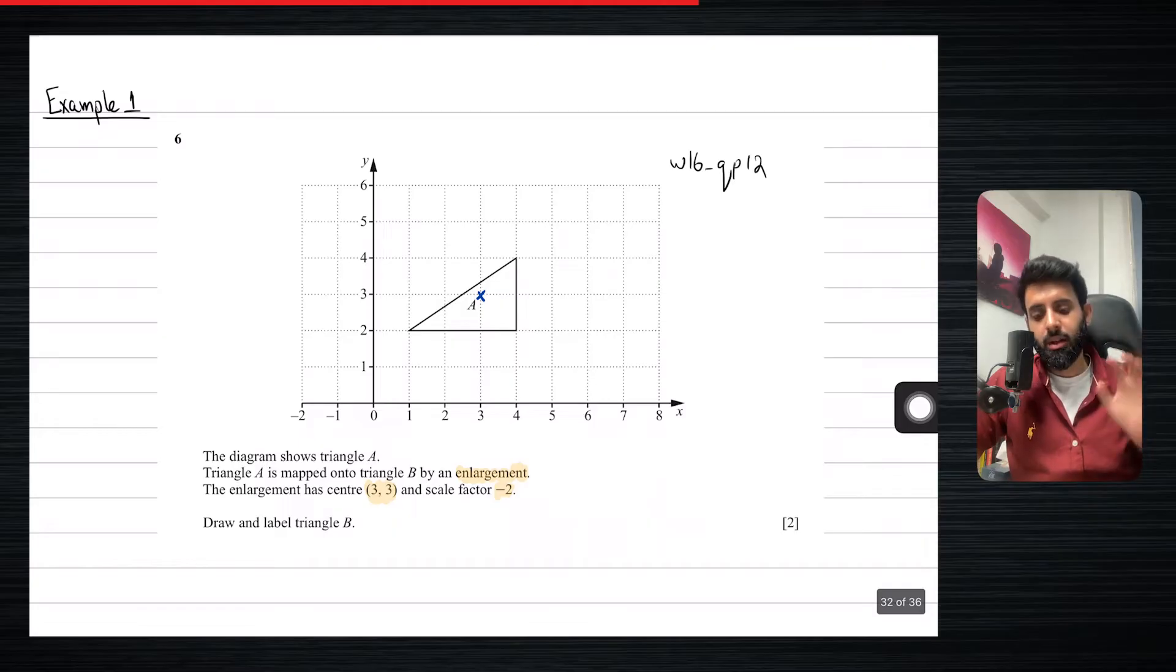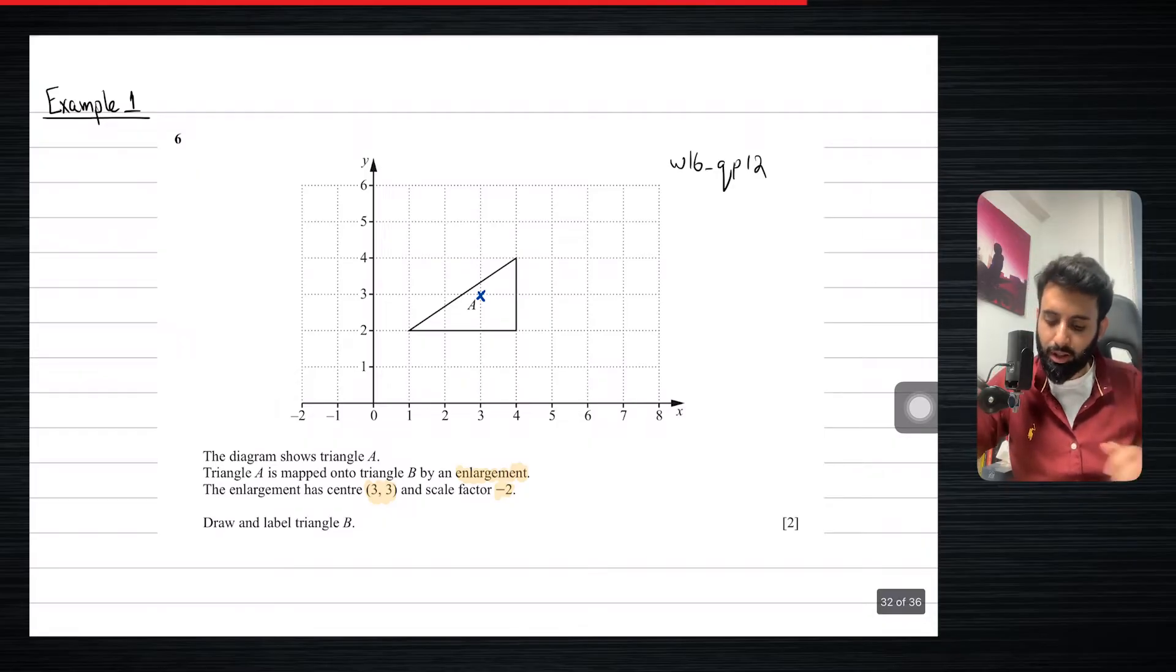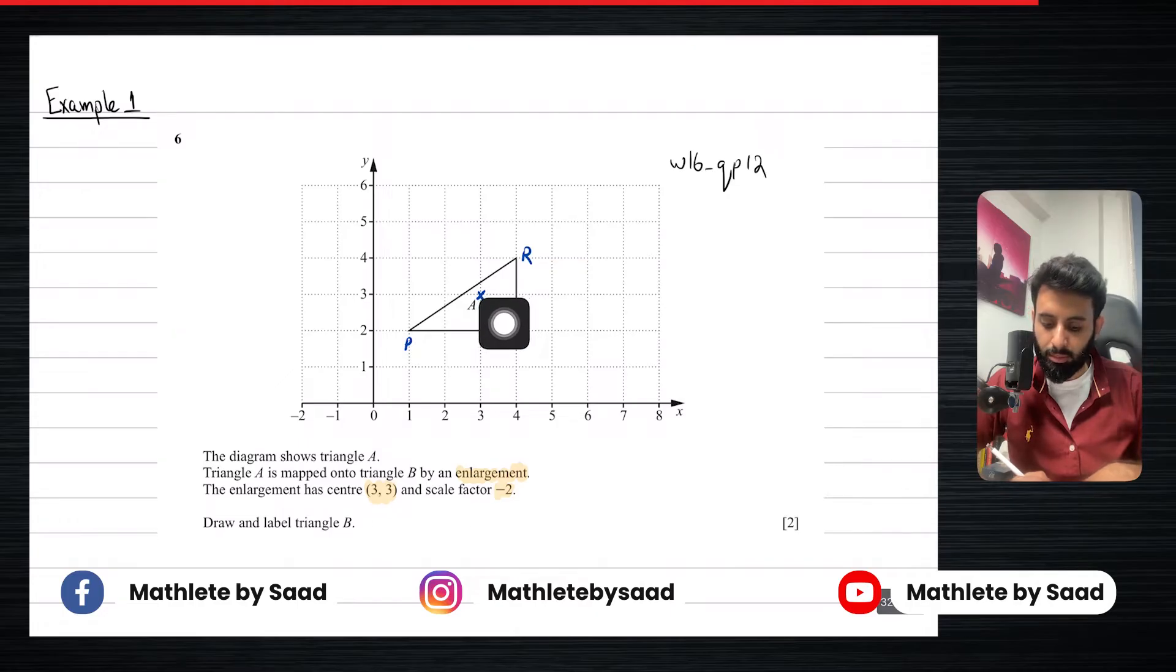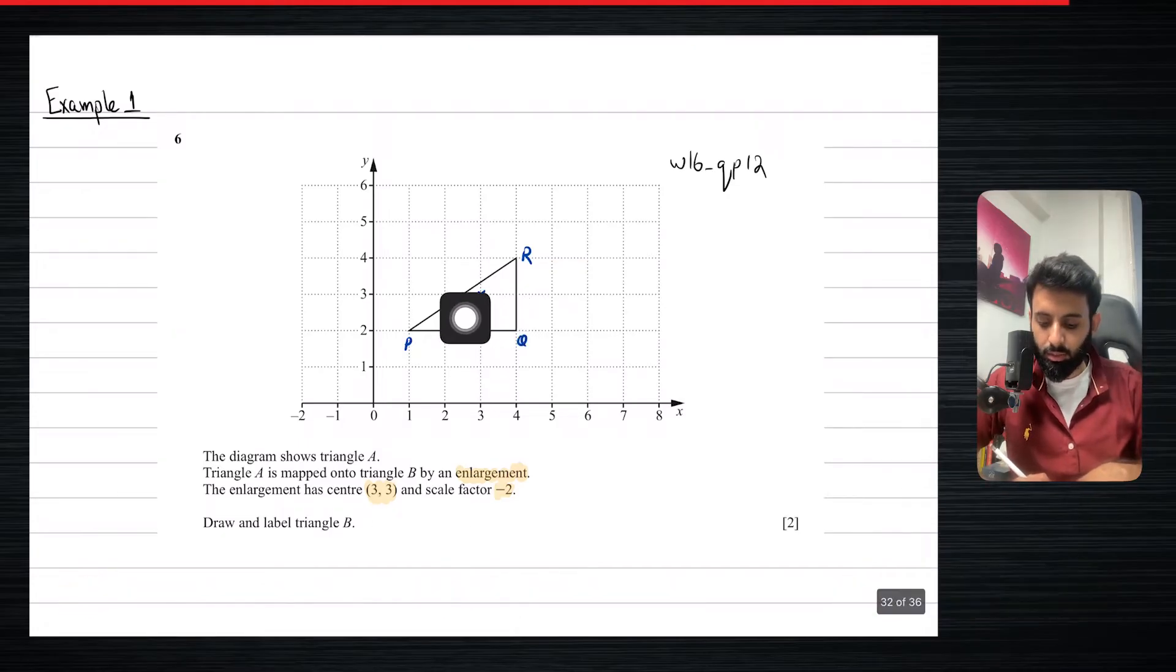So remember that once you're done rotating it, scale factor minus 2 means that the image is going to be 180 degrees rotated, and it's also going to be larger than the object. So it's always a good idea to label your points. So we're going to call this PQR. So let's start from P again, not necessarily that you have to start from P. So if you look at P from the center, it's 2 units to the left and 1 unit down.